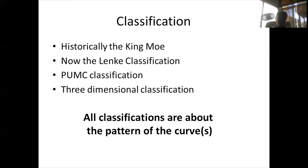After clinical and radiological examination confirming idiopathic scoliosis, different classifications exist: the old King-Moe classification has been replaced by the Lenke classification; there is also the Chinese PUMC classification and more recent three-dimensional classifications. These classifications describe curve patterns, facilitate communication among surgeons, and the Lenke classification is particularly valuable in selecting fusion levels for corrective surgery.